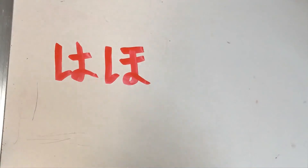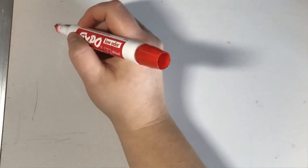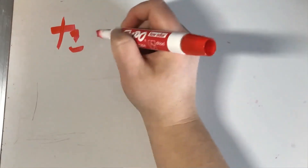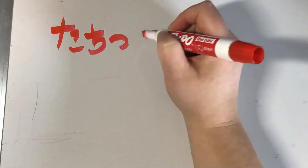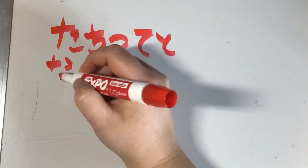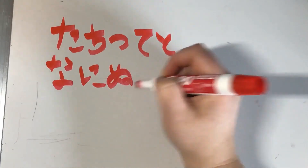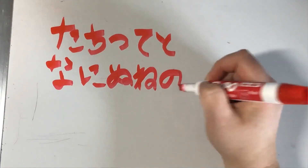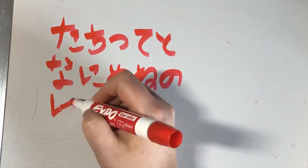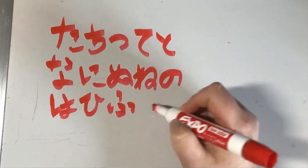Let's review all the characters we learned today. The T-row: ta, chi, tsu, te, to. The N-row: na, ni, nu, ne, no. And the H-row: ha, hi, fu, he, ho. Those are our 15 characters for today.